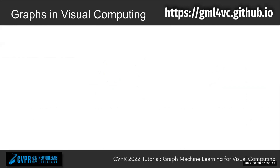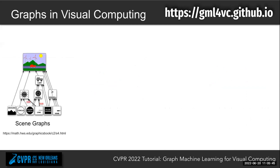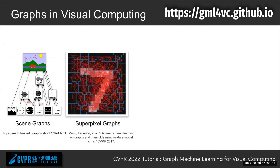There are lots of data in visual computing that also have this underlying graph structure. In computer graphics, we use scene graphs to represent a scene — each object can be represented as a node in the graph and associated with sub-objects. In image understanding, people use a superpixel graph to represent images, grouping similar pixels together to form a superpixel, and then using this superpixel graph for image classification or image segmentation.